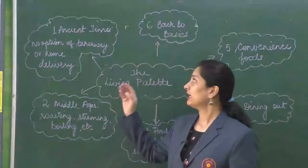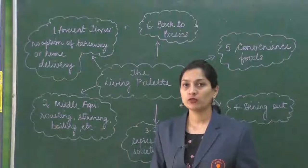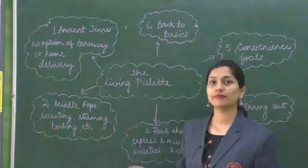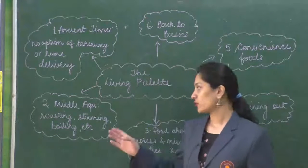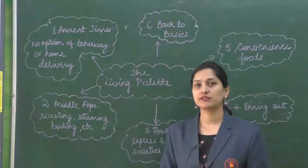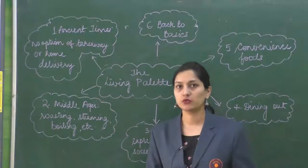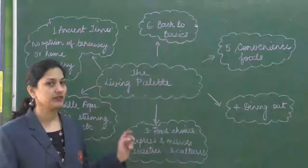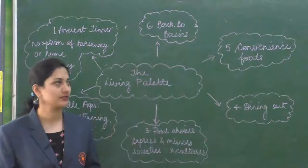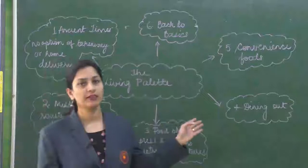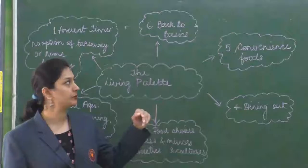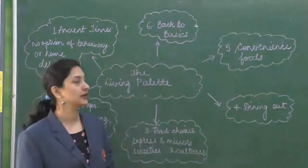Point number one: in ancient times there was no option of takeaway or home delivery. Point number two: in the middle ages, roasting, steaming, and boiling etc. were the different kinds of cooking styles used. Point number three: food choices express and mirror societies and cultures. Point number four: then came the concept of dining out. Point number five: convenience food. And point number six: back to basics. Let us now look at the summary of the chapter.